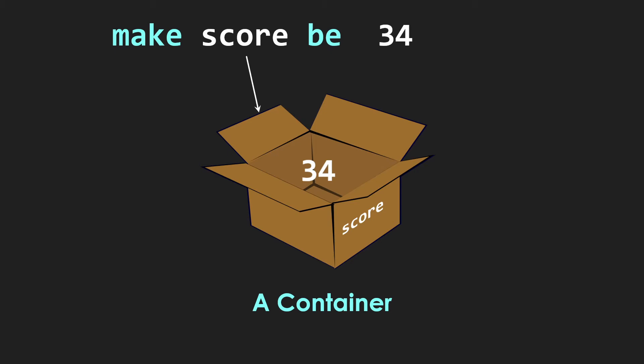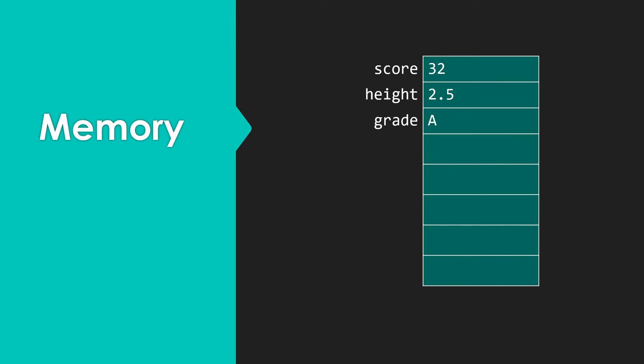So obviously our computers don't have cardboard boxes in them. So what are we really talking about when we say that a variable is a container that we're storing things into, really a label for the container? So our computer does have something called main memory.